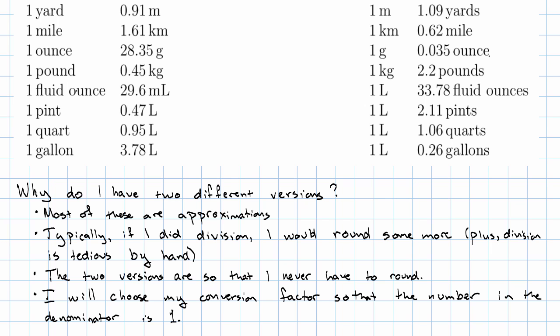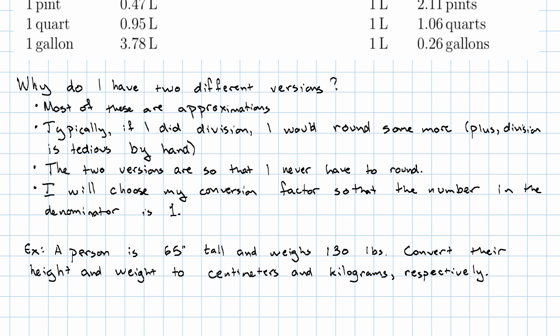So let's see an example. Suppose that a person is 65 inches tall and weighs 130 pounds, and we want to convert their height and weight to centimeters and kilograms. That respectively just means in that order. So we want to convert their height to centimeters and their weight to kilograms.